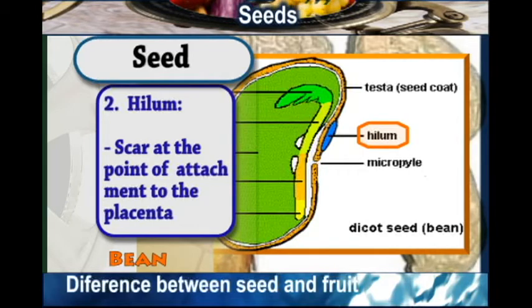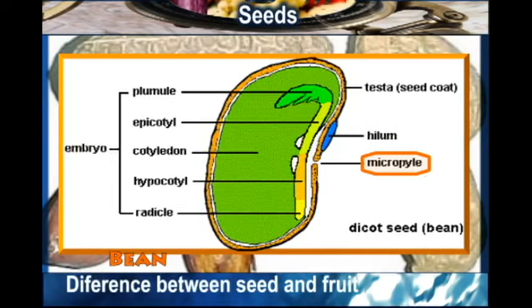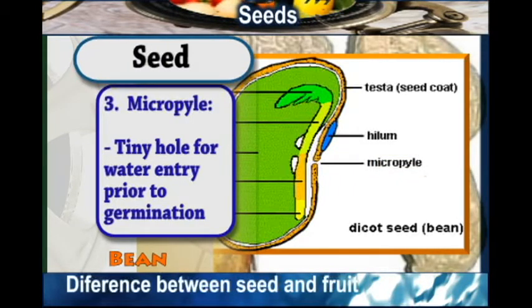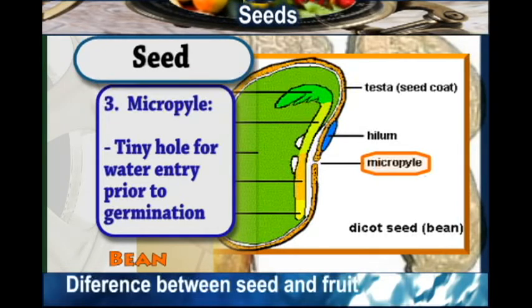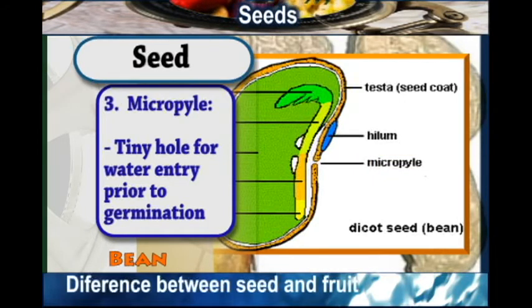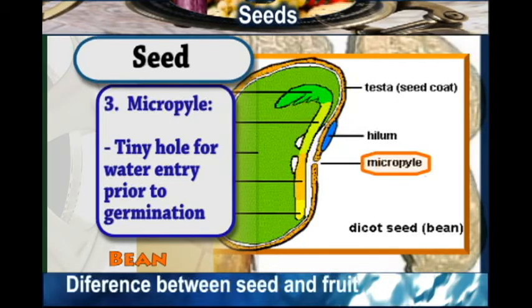We also have the micropyle. The micropyle is a tiny hole — it is the entry point for water prior to germination. When germination is going to take place, water is needed, and the water enters the seed via this tiny hole which we call the micropyle.